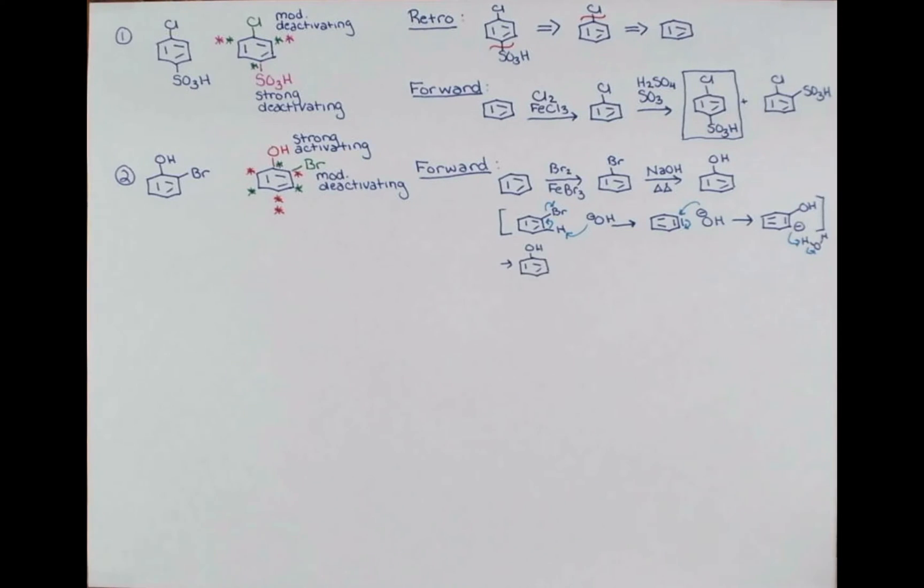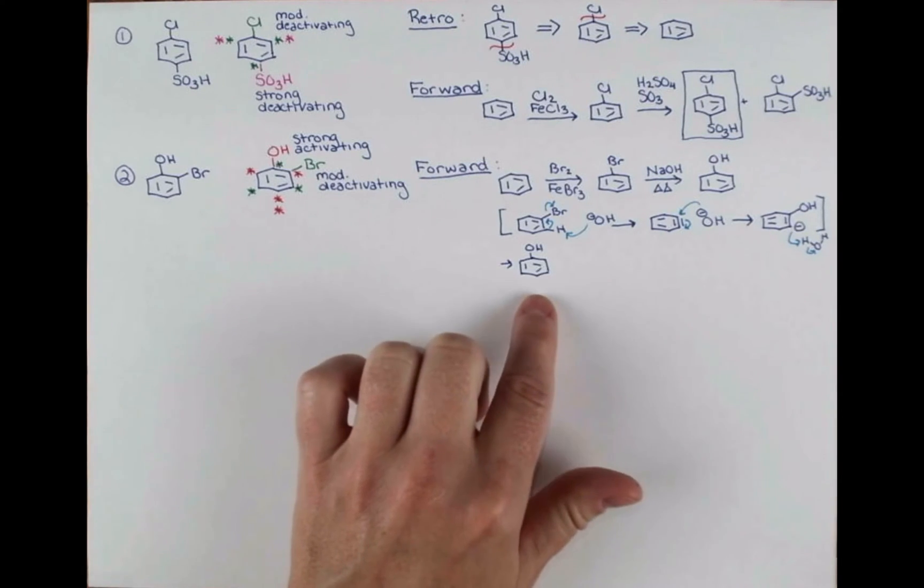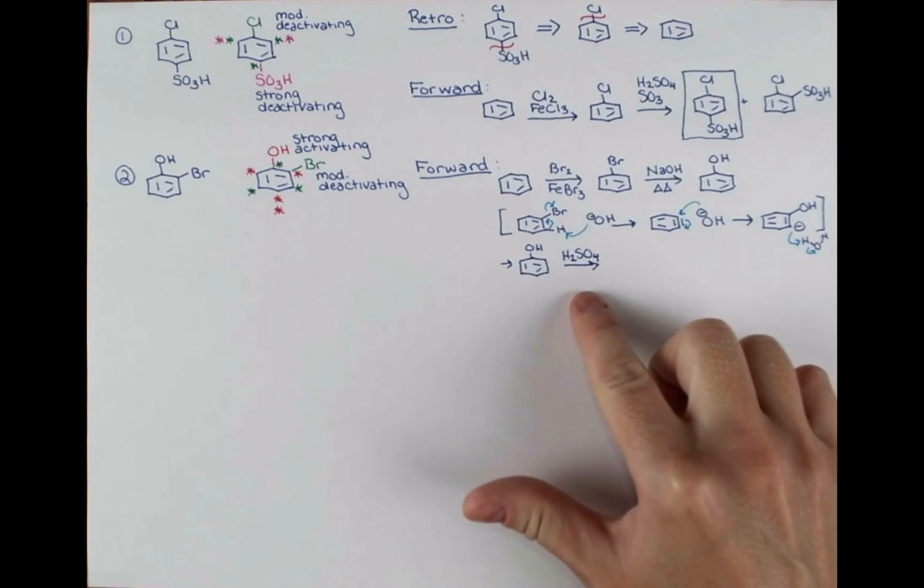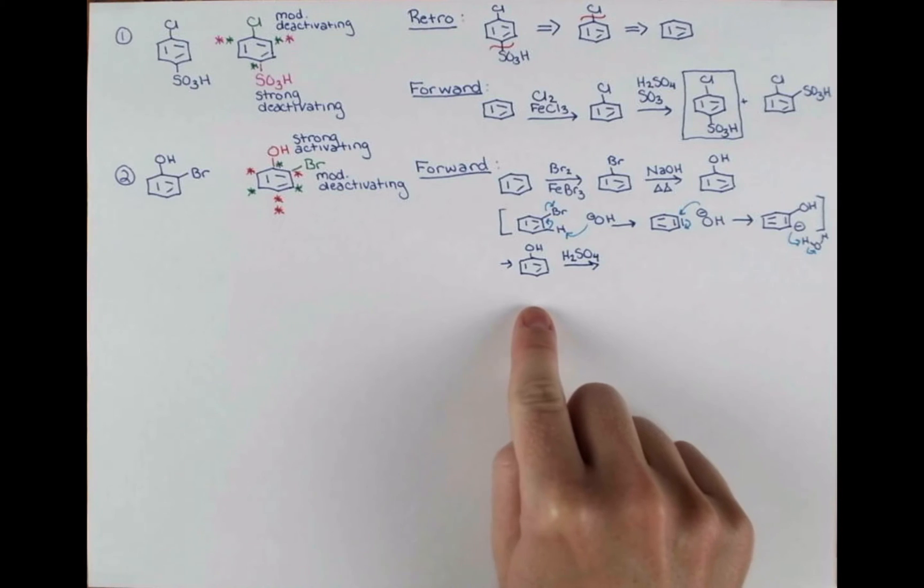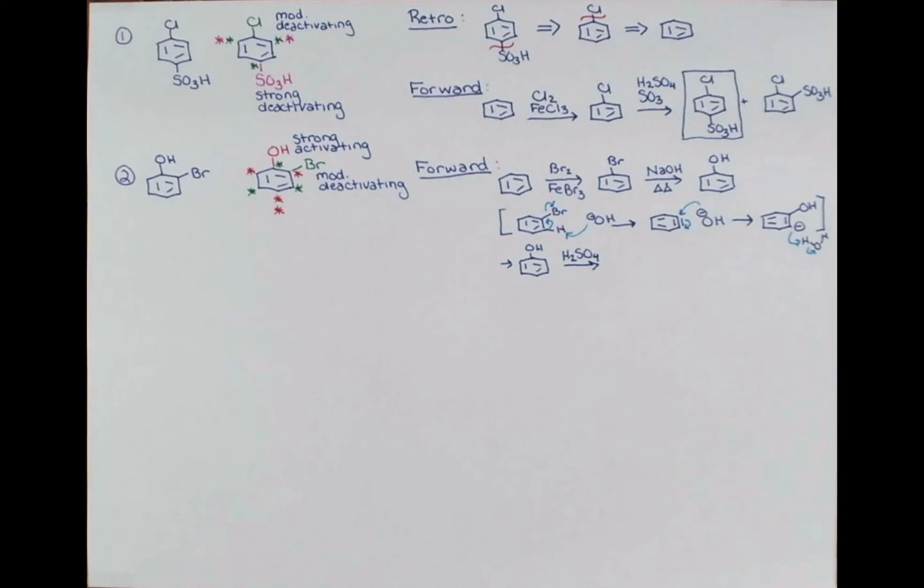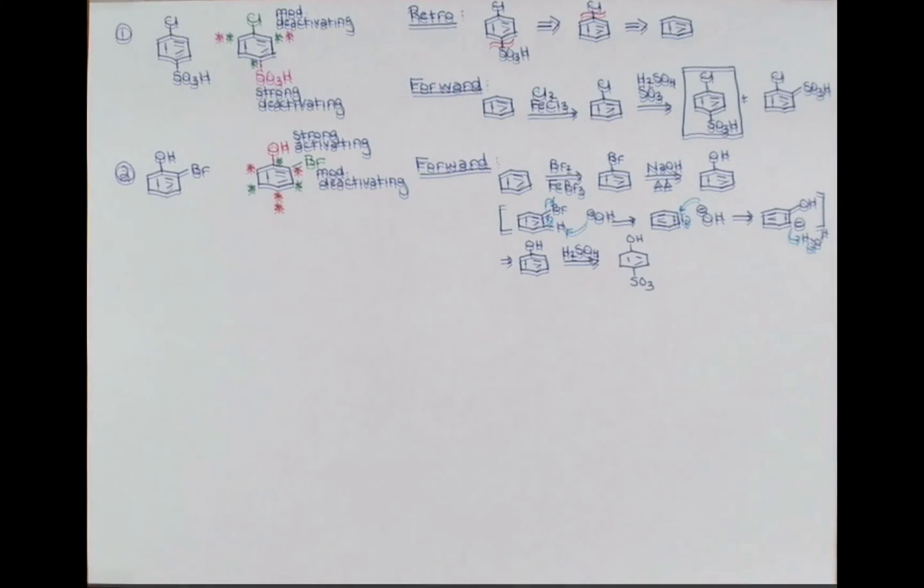So now that we have phenol, it's really going to want to react at this para position. So let's do that. Let's sulfonate it at that para position. If you watch my sulfonation video, you'll know that there's these two ways to do this. Phenol being so activated should smoothly react in EAS, becoming sulfonated with just H2SO4. Now, we've blocked this position.